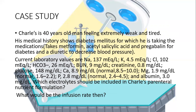Moving to the case study: Charles is a 40-year-old man feeling extremely weak and tired. His medical history shows diabetes mellitus, for which he is taking metformin, acetylsalicylic acid, pregabalin, and a diuretic to decrease blood pressure. His current laboratory values are given for sodium, chloride, glucose, calcium, magnesium, albumin, and potassium. The question is which electrolytes should be included in Charles's parenteral nutrition formulation.